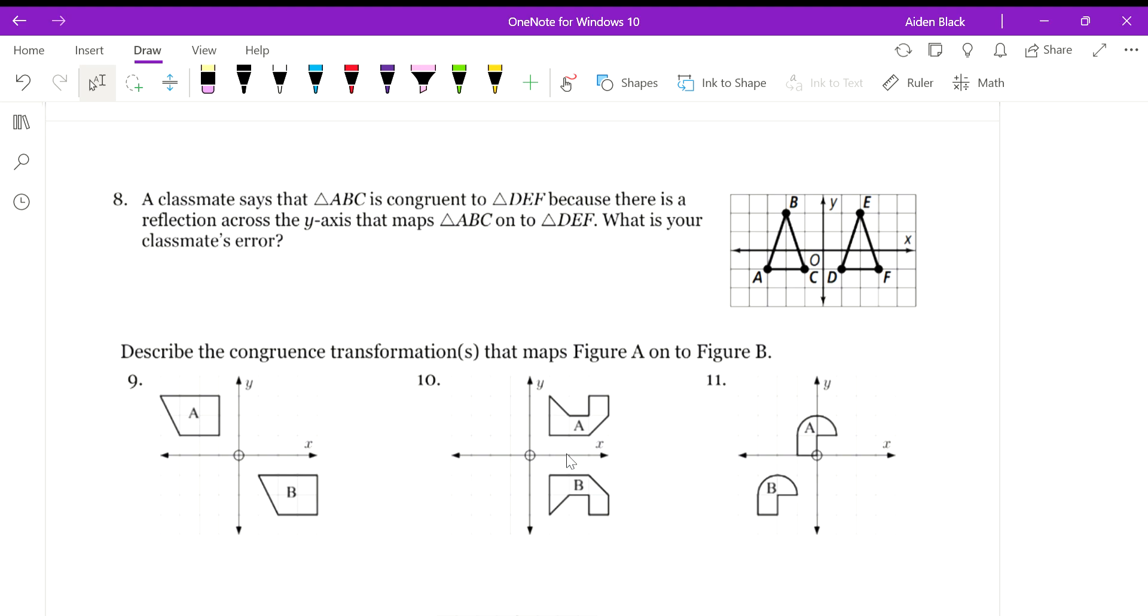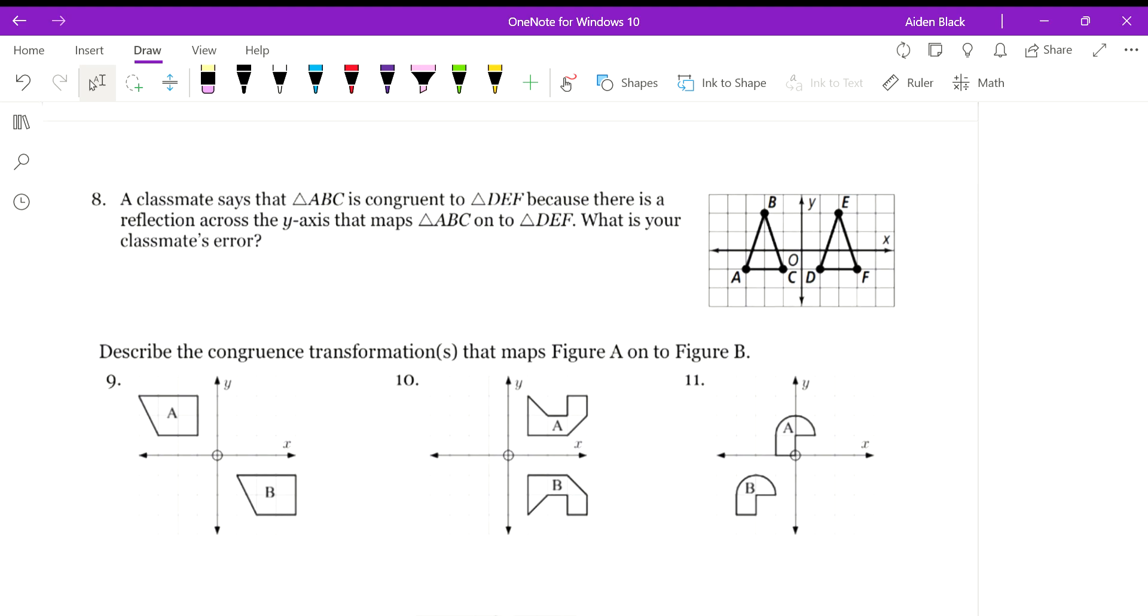So let's look at question 8. It says, a classmate says that triangle ABC is congruent to triangle DEF because there's a reflection across the y-axis that maps ABC onto DEF. What is the classmate's error?